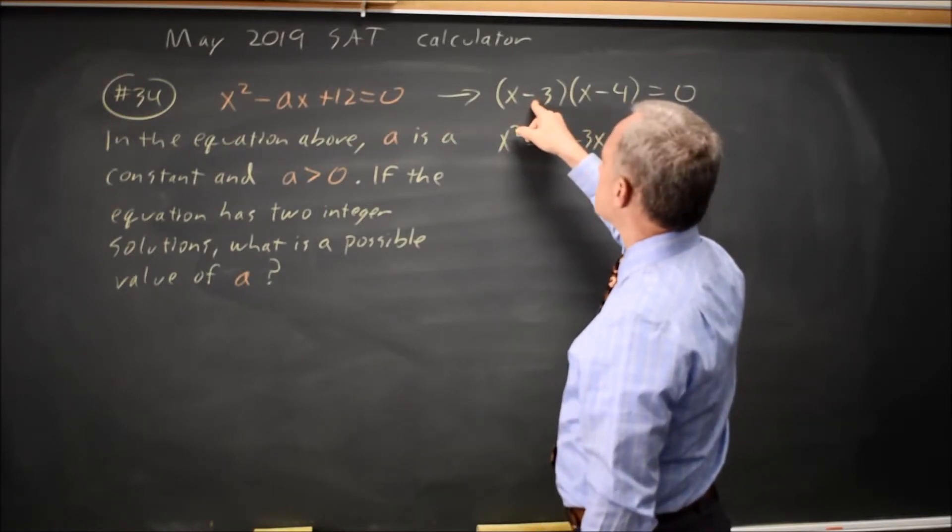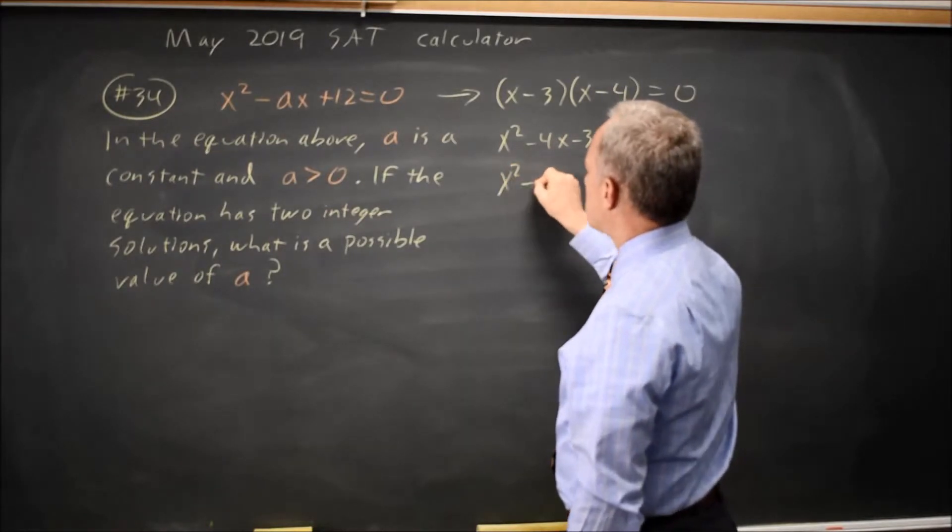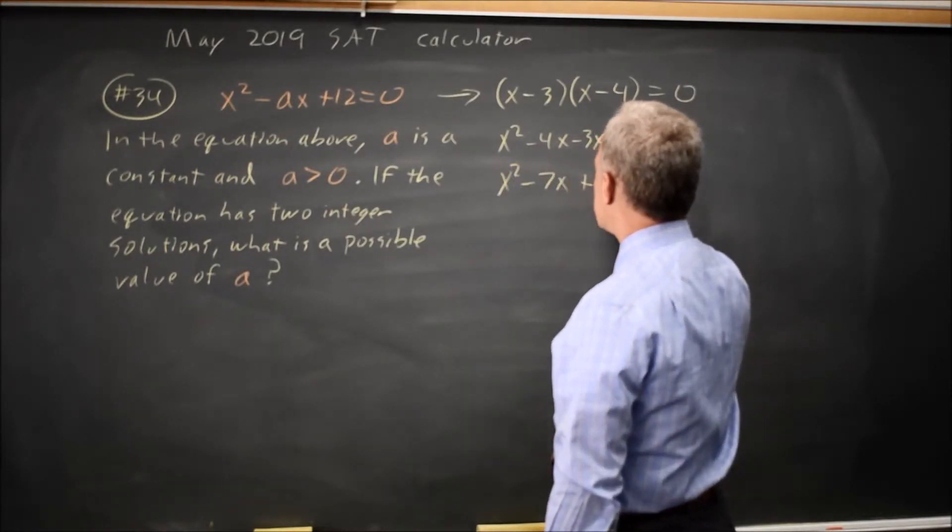And this does have two integer solutions, X equals 3, X equals 4, X squared minus 7X plus 12 equals 0.